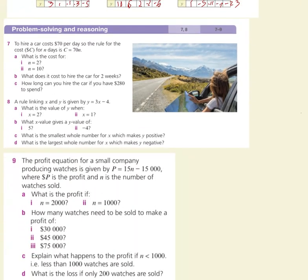Moving on: to hire a car it costs $70 per day, so the rule is C equals 70n for n days. What is the cost for n equals 2? It will be 70 times 2, which is $140. For n equals 10, it's 70 times 10, which is $700. To hire it for two weeks: 70 times 14 is $980.